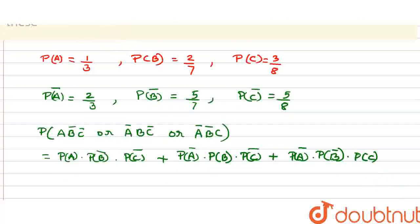Now let us put the values. I will get 1 by 3 into 5 by 7 into 5 by 8, plus 2 by 3 times 2 by 7 times 5 by 8, plus 2 by 3 times 5 by 7 times 3 by 8.